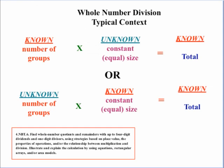Now, the typical context for whole number division is one of these two situations. We know the total and the number of groups, and we're looking for the size of the group, or we know the total and the size of the group, and we want to know how many groups could we make from that total of that certain size.